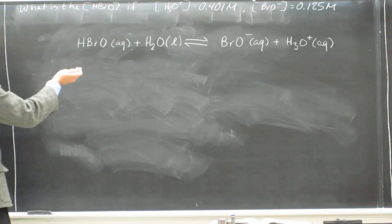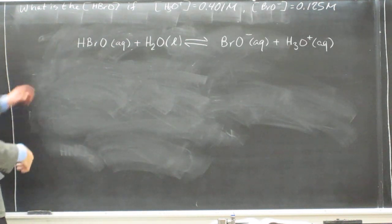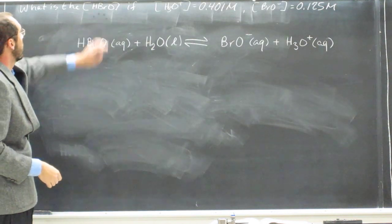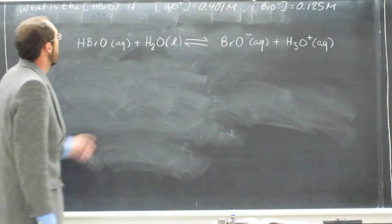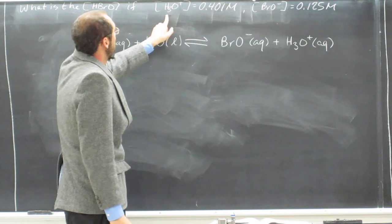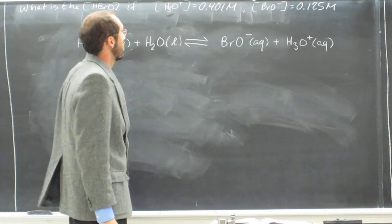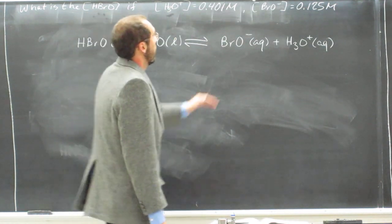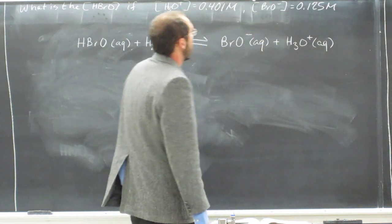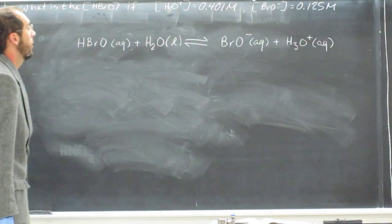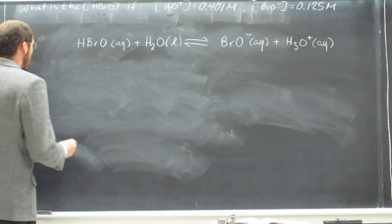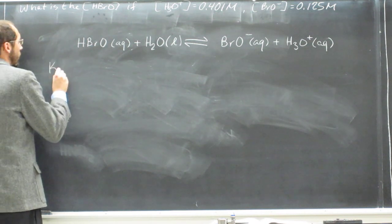So the first thing we need to do for this problem, what is the molar concentration of hypobromous acid if the hydronium ion concentration is 4.01 molar and the anion concentration is 0.125 molar? Well, the first thing we need to do is figure out the Ka.